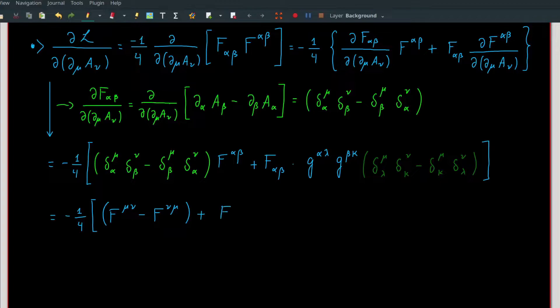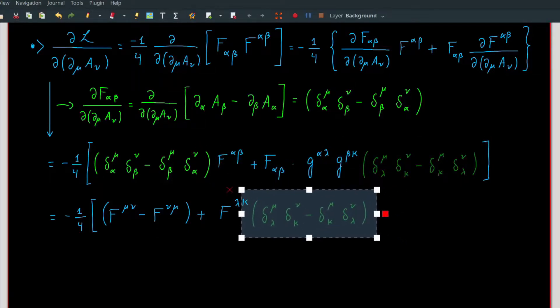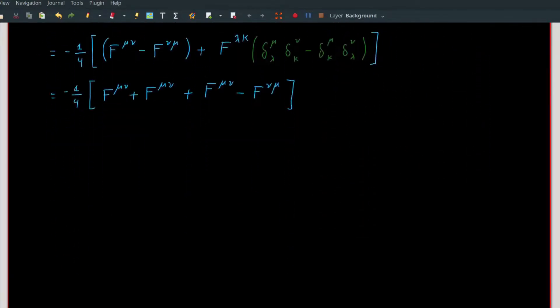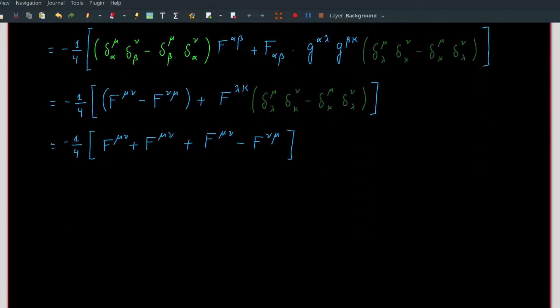In the second term, we can raise the indices of f_{αβ} using the g^{αλ} and g^{βκ}, leaving the Kronecker deltas alone for a moment. Finally, we use the fact that f is anti-symmetric under index interchange and I distribute f^{λκ} into the green parenthesis. Using the anti-symmetry under index interchange once more, we conclude that the derivative of L with respect to ∂_μ A_ν is negative f^{μν}.